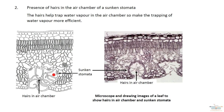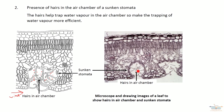Some air chambers will have hairs in them. The hairs are able to trap more water vapor — shown here as red dots — which accumulates more efficiently in the air chamber. Another benefit is that wind blowing past won't remove the water vapor, because it is inside the plant, so all the water vapor remains in that chamber.